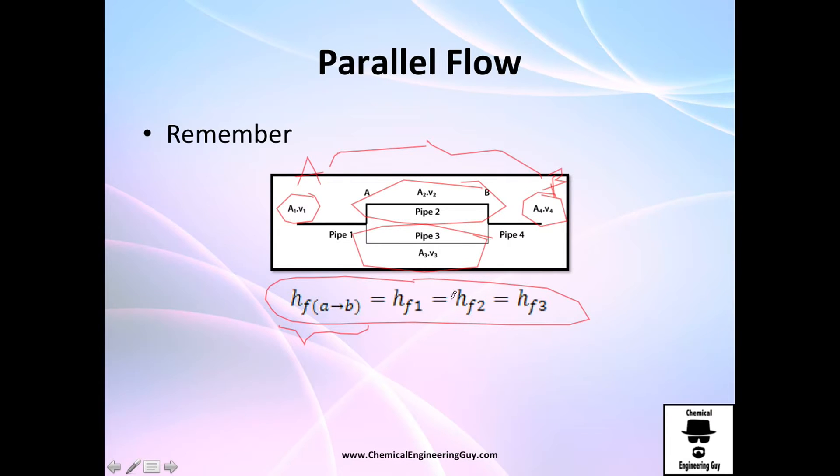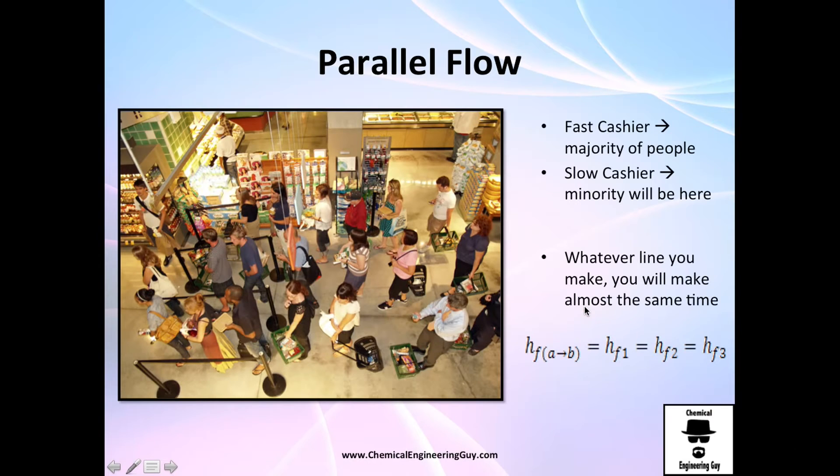I like to make this analogy: if you see a fast cashier, there's going to be a lot of people because they want to move fast. But because the fast cashier is fast, we have a lot of people in the queue.